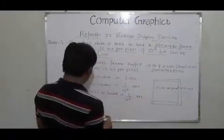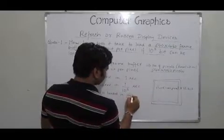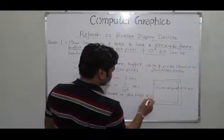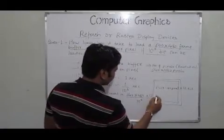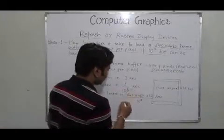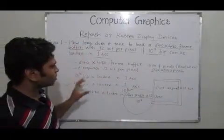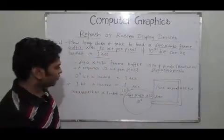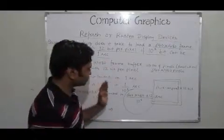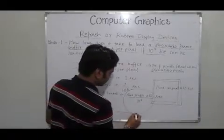From this relation, we can say that 640 into 480 into 12 bits picture we have to load. That gives us 640 into 480 into 12 divided by 10 to the power of 5 seconds. This is the amount of time to draw the picture on the screen.